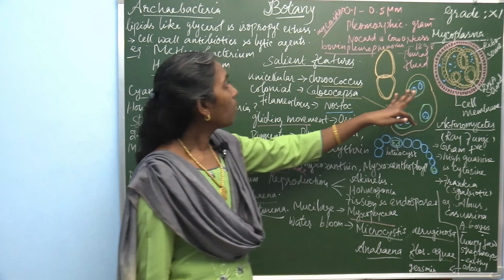Mycoplasma also causes diseases in plants. The next species is Actinomyces, commonly called ray fungi because of its mycelial structure. Actinomyces, or Actinobacteria, is a gram-negative bacterium. Its DNA contains high guanine and cytosine, in contrast to Mycoplasma which has low guanine and cytosine.